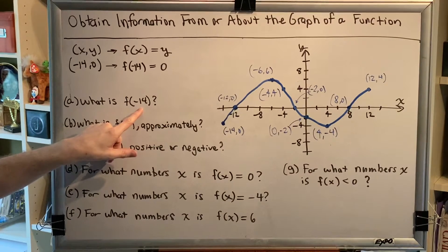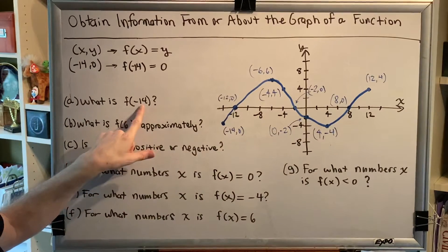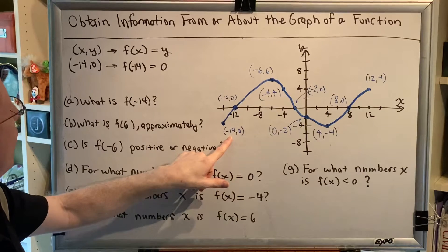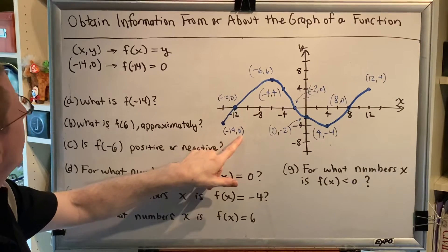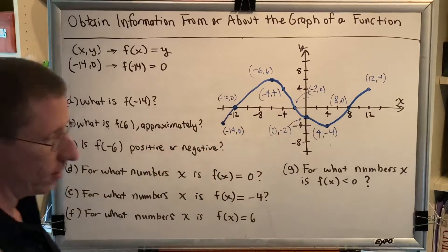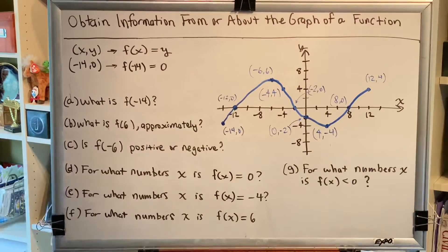We go to our graph and we look for a point with an x coordinate of negative 14, which we see right here. Then all we have to do is figure out what's the y value, which we can see is 0. So the answer to this question is 0. f(-14) = 0.